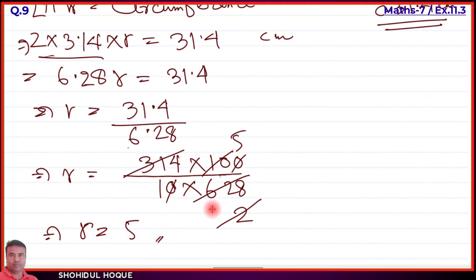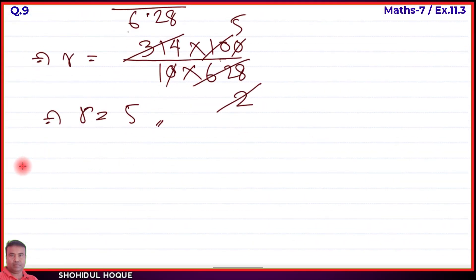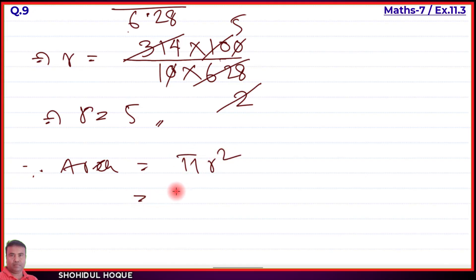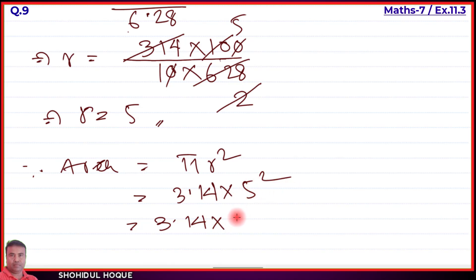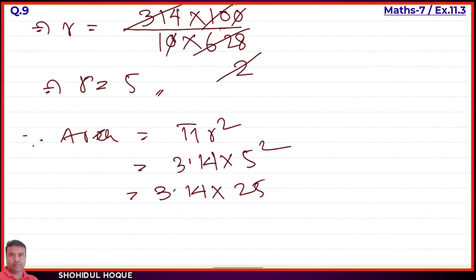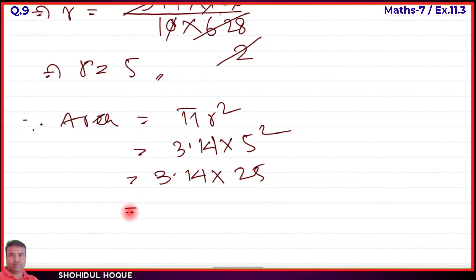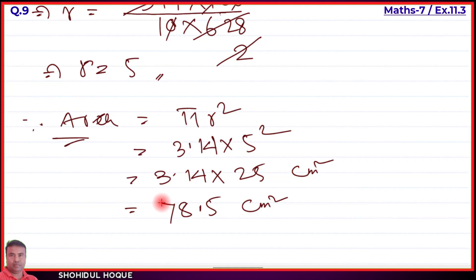Now we find the area of the circle. Area equals π r squared equals 3.14 into 5 squared. 5 squared equals 25. So area equals 3.14 into 25 equals 78.5 square centimeters. The area of the circle is 78.5 cm². That completes question number 8 and question number 9.